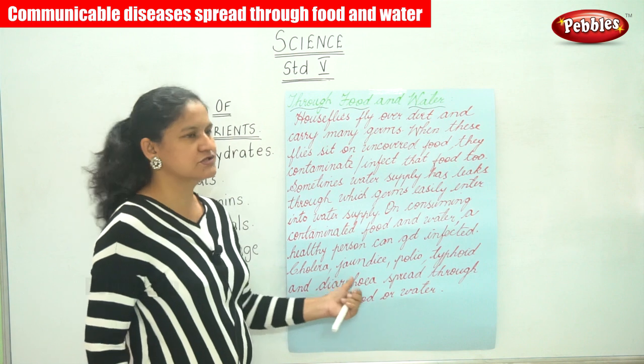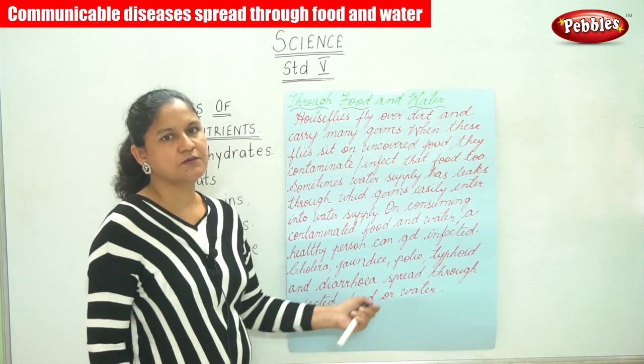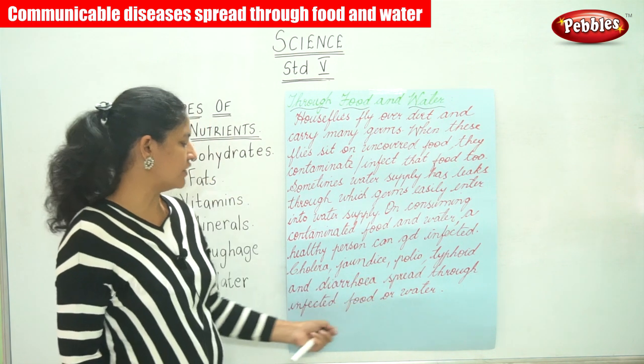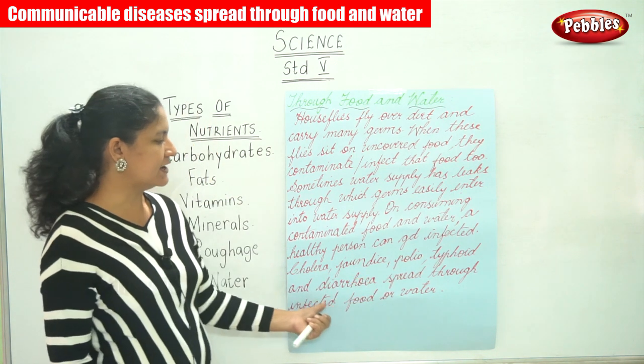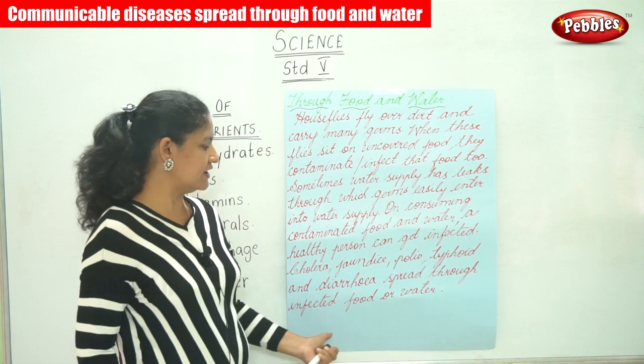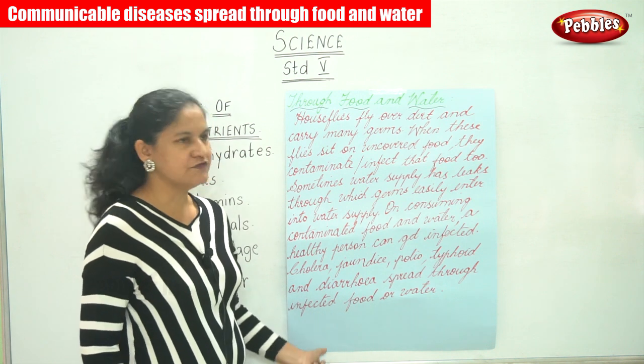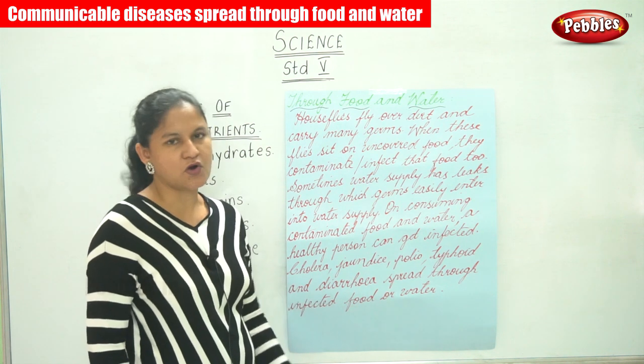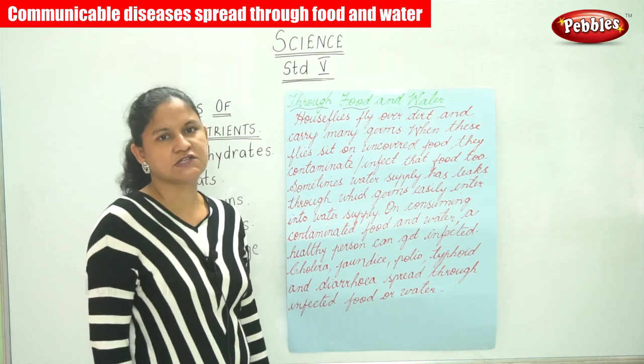Cholera, jaundice, polio, typhoid, and diarrhea spread through infected food and/or water.